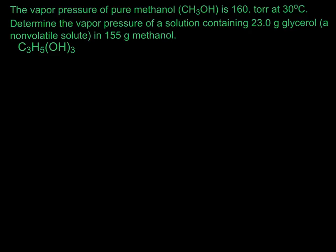Let's do an example where we determine the vapor pressure of a solution after we've added a non-volatile solute. The vapor pressure of pure methanol is 160 torr at 30 degrees C. We want to determine the vapor pressure of a solution containing 23.0 grams of glycerol, which is a non-volatile solute, in 155 grams of methanol. Here is the molecular formula for glycerol.